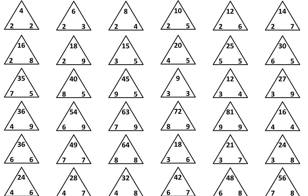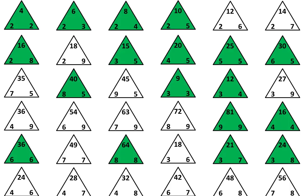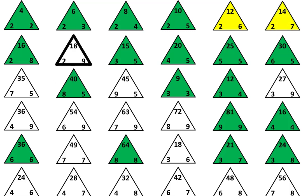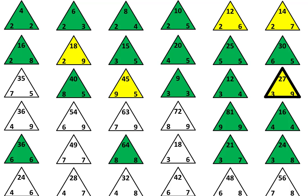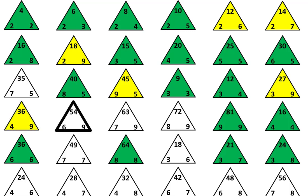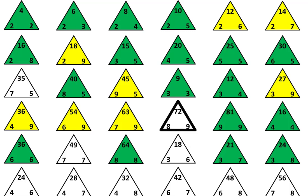When you finish, shade in the facts that you feel you are becoming very familiar with. Then, when you look again, you might find connections and relationships you did not shade in at first. For example, when you multiply by 2, the result is the same as doubling: double 6 is 12, double 7 is 14, double 9 is 18. You may also notice a pattern with multiplying by 9: 5 times 9 is 5 less than 50; 3 times 9 is 3 less than 30; 4 times 9 is 4 less than 40; 6 times 9 is 6 less than 60; 7 times 9 is 7 less than 70; and 8 times 9 is 8 less than 80.